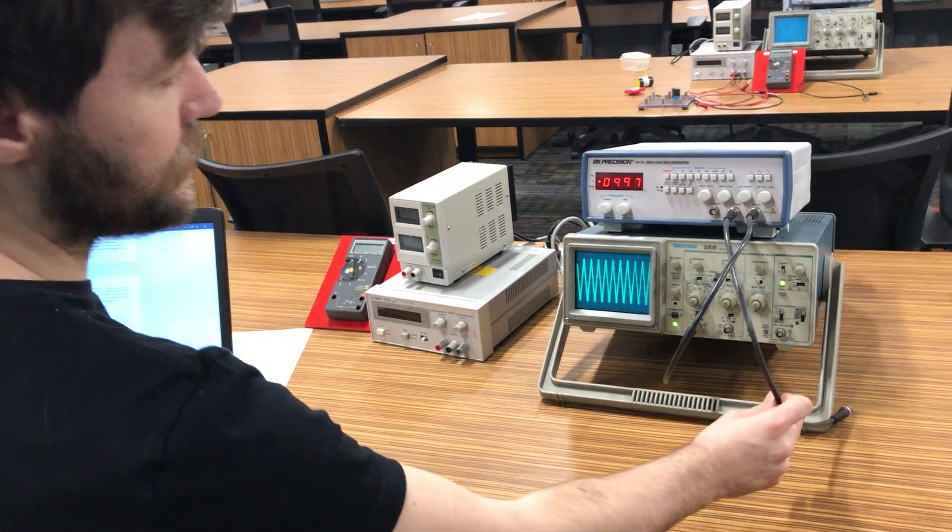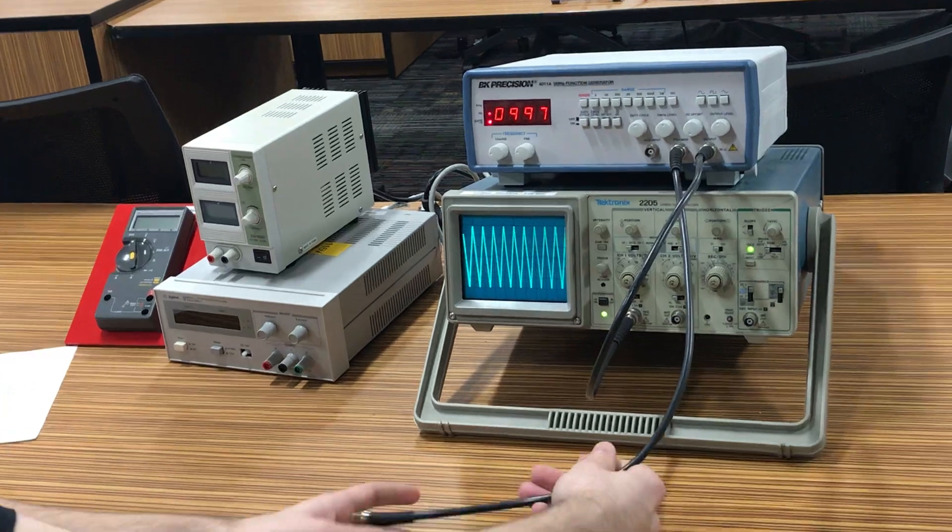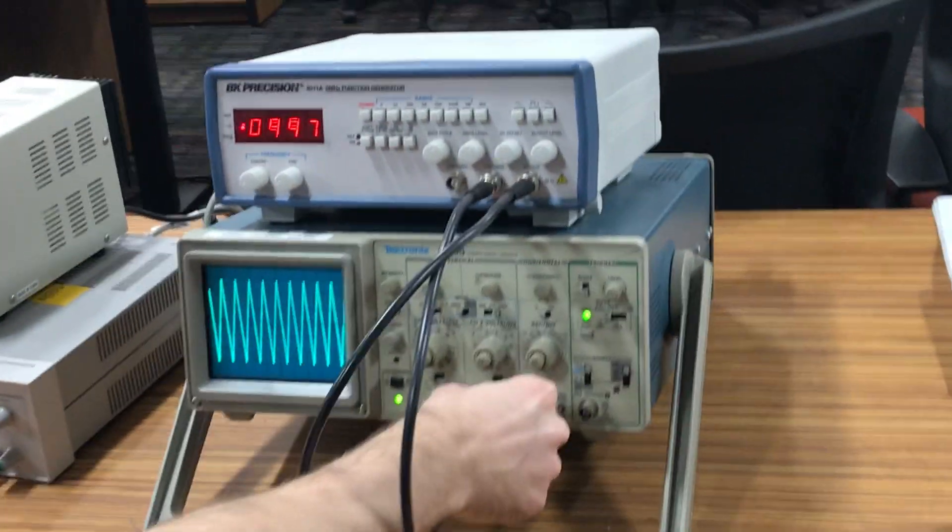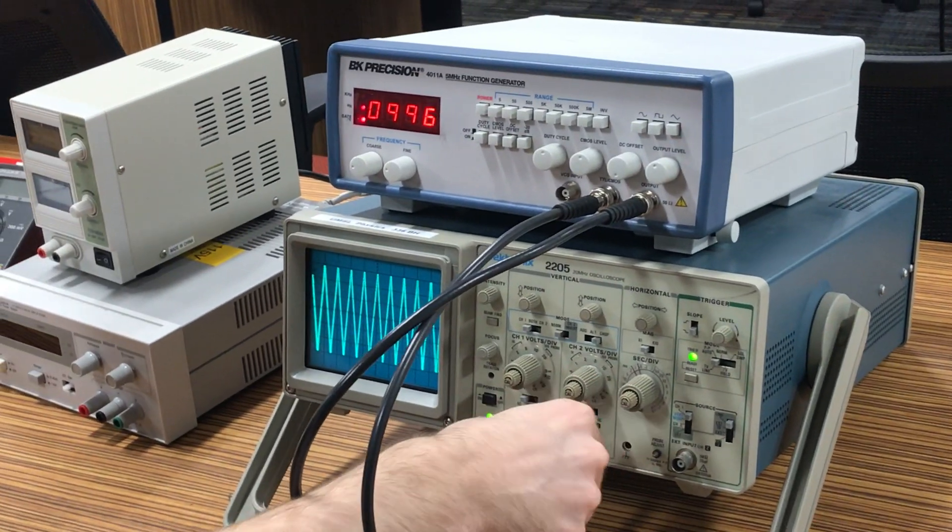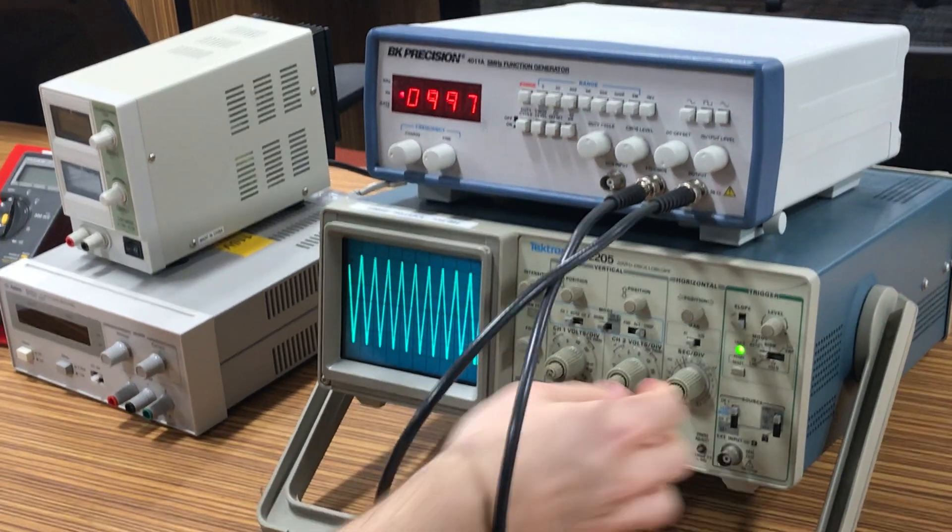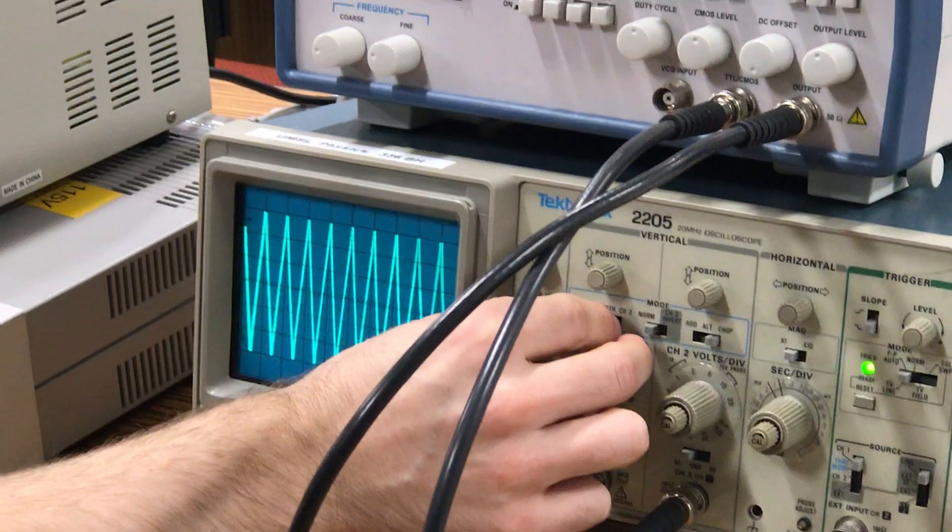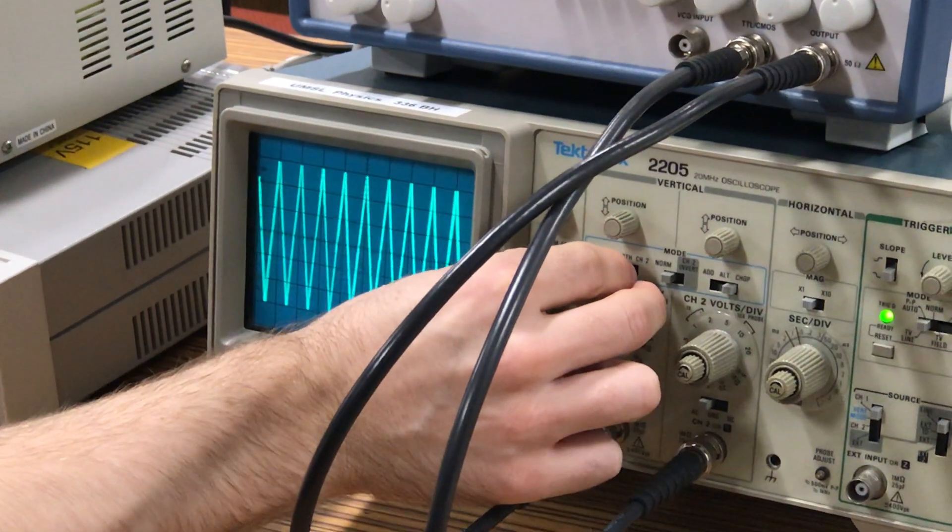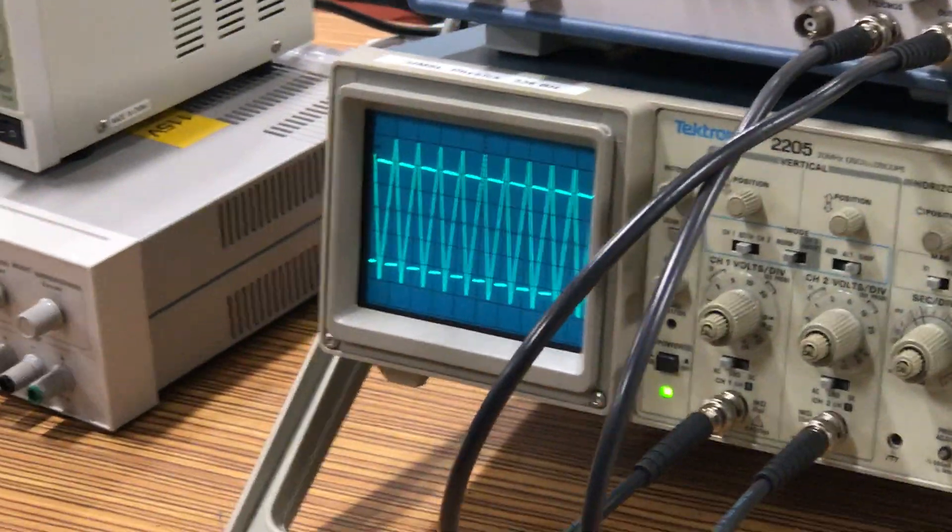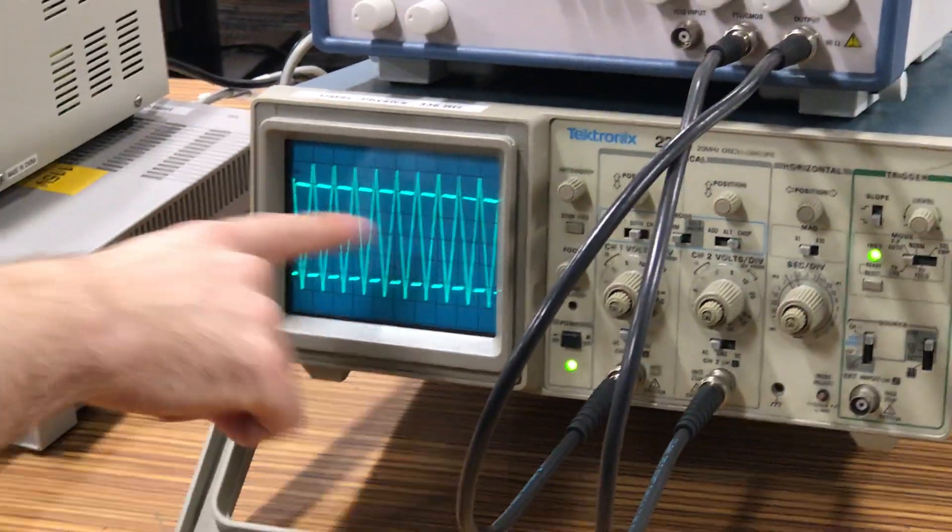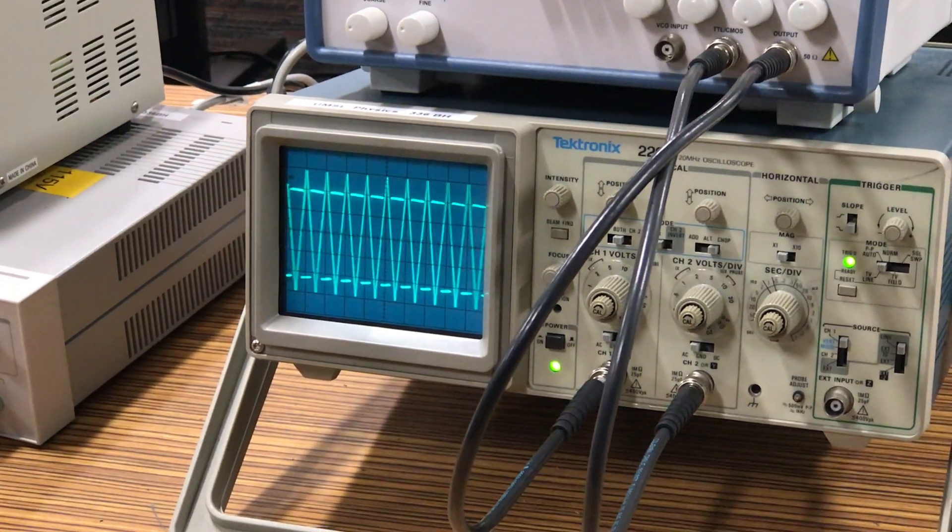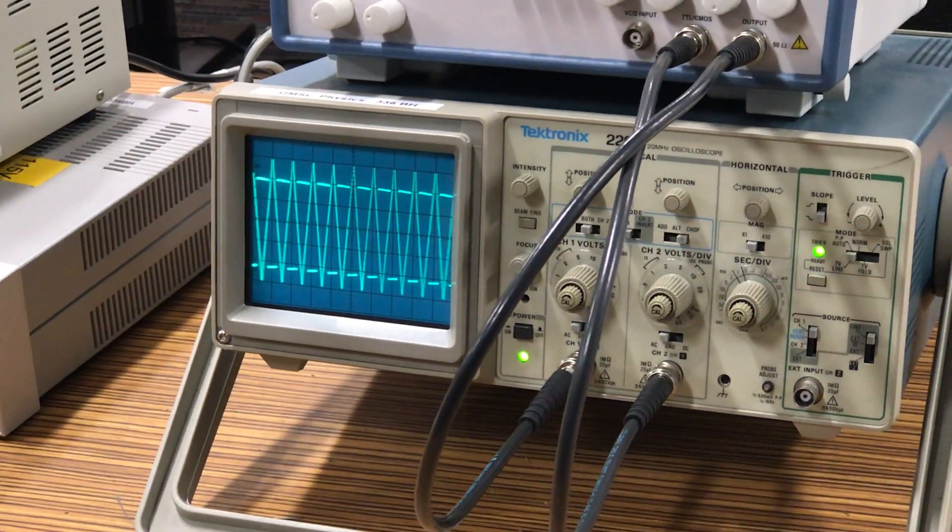This is going to be connected to the TTL portion of our function generator which we will then hook into channel 2 of our oscilloscope. Now we will set our oscilloscope to read or display both channels at once. Now we see we have another signal coming through, these sort of dashed lines that you can see in between the peaks of our signal from channel 1.